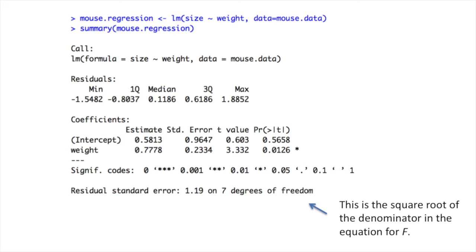The next line, the residual standard error, is the square root of the denominator in the equation for F.